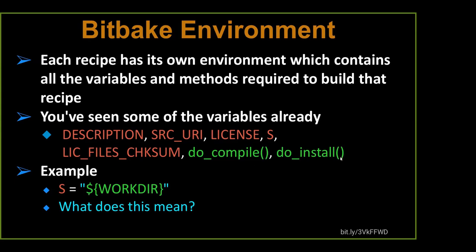You can either bypass tasks or augment them by making them happen before or after a task — using do_compile, do_install, or maybe some appends. We can do all of that because BitBake allows us to use executable metadata. The work directory is where the actual source is going to be unpacked and eventually configured. We're trying to look at the total environment of the system and figure out what went wrong.